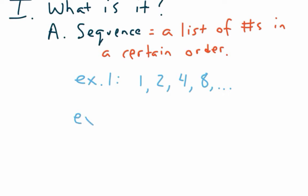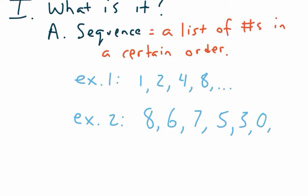It doesn't have to be something quite like that though. For example, if you were to have the sequence 8, 6, 7, 5, 3, 0... anybody see the next number? So: 8, 6, 7, 5, 3, 0.